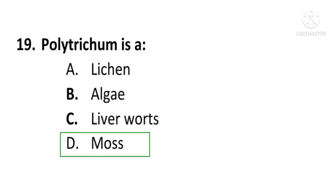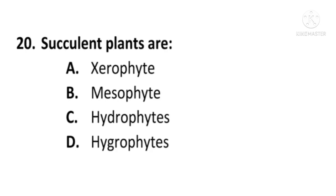Next question: Polytrichum is a — A) Lichen, B) Algae, C) Liverwort, or D) Moss. The answer is D, Moss. Polytrichum is a moss; D is the correct option. Next question: Succulent plants are — A) Xerophytes, B) Mesophytes, C) Hydrophytes, or D) Hygrophytes. The correct option is A, Xerophytes. Succulent plants are xerophytes.